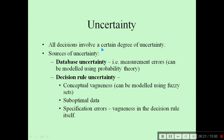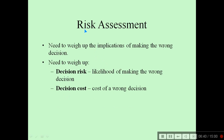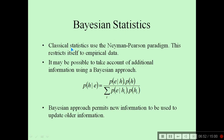All decisions involve a certain degree of uncertainty. Sources of uncertainty may be database uncertainty — such as measurement errors — or decision rule uncertainty, which includes conceptual vagueness, suboptimal data, and specification errors. Risk assessment requires weighing up the implications of making the wrong decision and the associated decision cost. Classical statistics use the Neyman-Pearson paradigm, which is restricted to empirical data. It may be possible to take account of additional information using the Bayesian approach, which permits new information to be used to update older information.